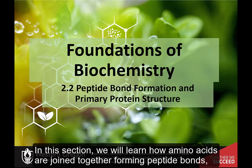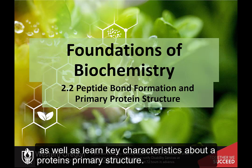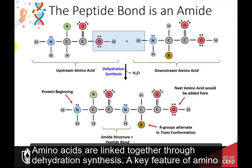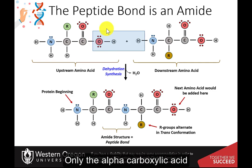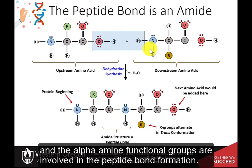In this section, we will learn how amino acids are joined together forming peptide bonds, as well as learn key characteristics about a protein's primary structure. Amino acids are linked together through dehydration synthesis. A key feature of amino acids joining together is that the R groups of the amino acids are not involved in the process. Only the alpha carboxylic acid and the alpha amine functional groups are involved in peptide bond formation.